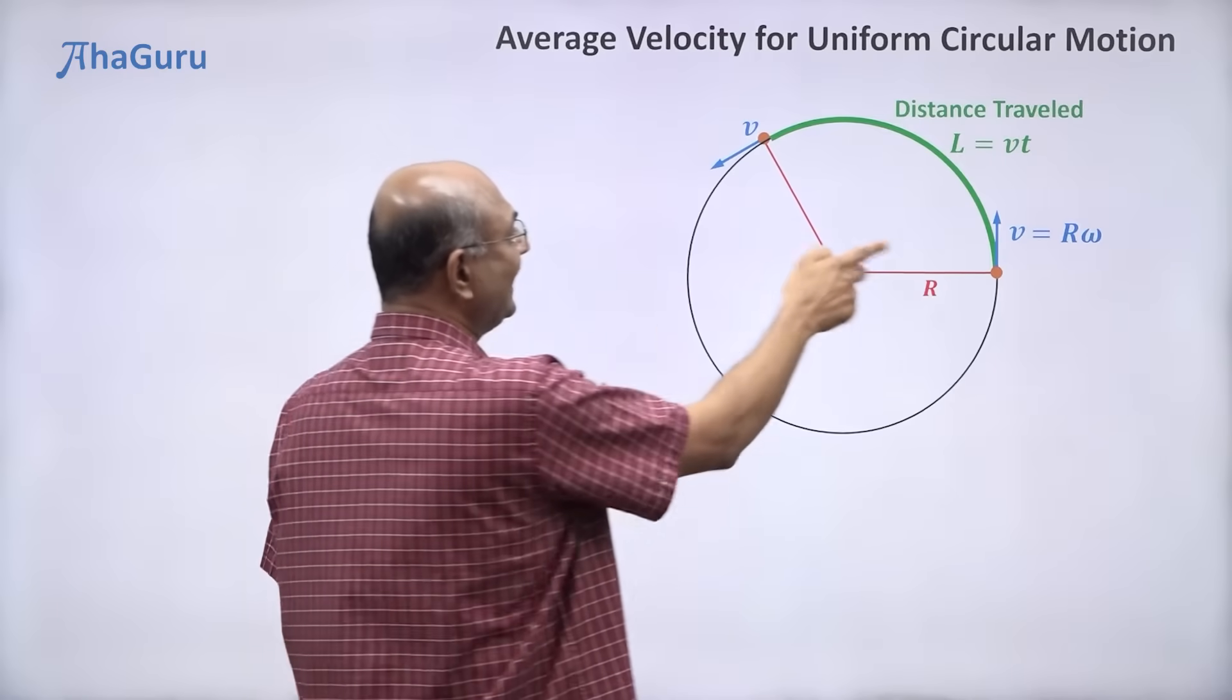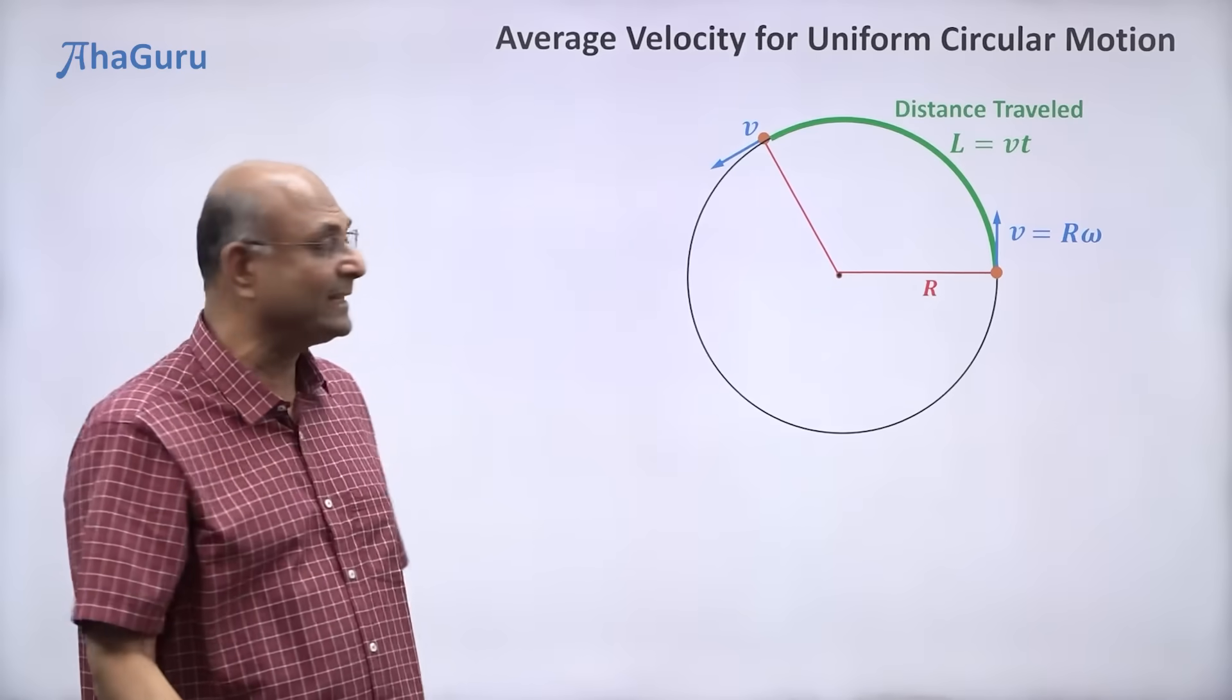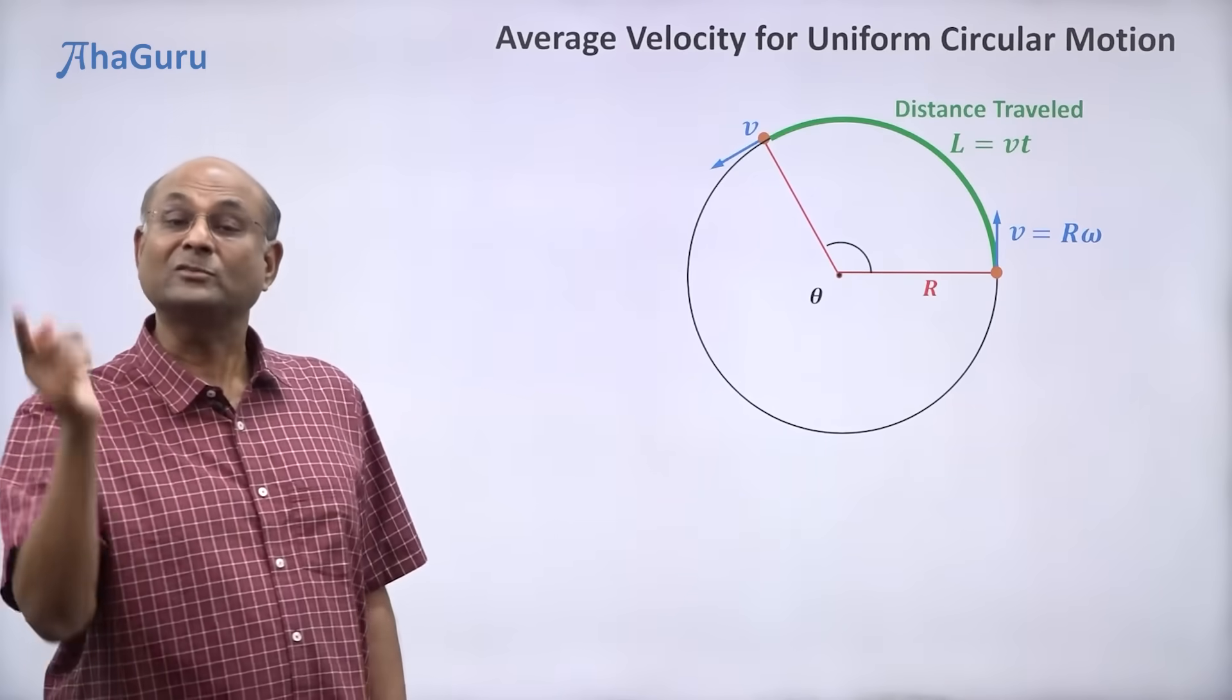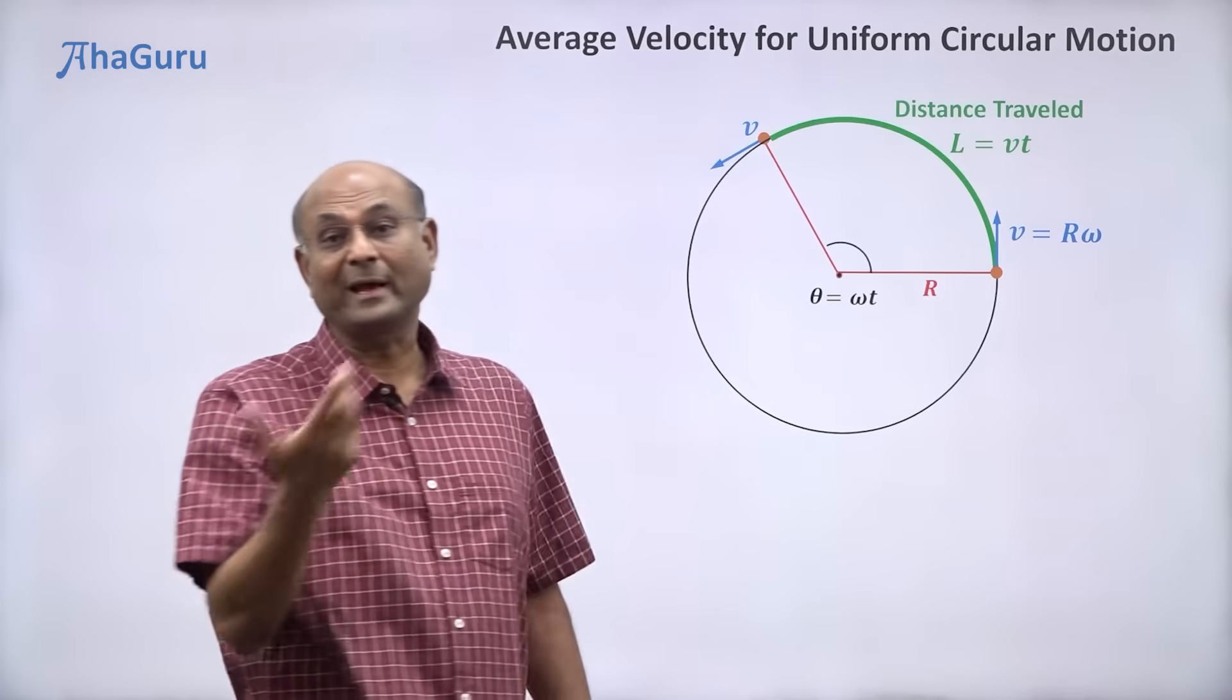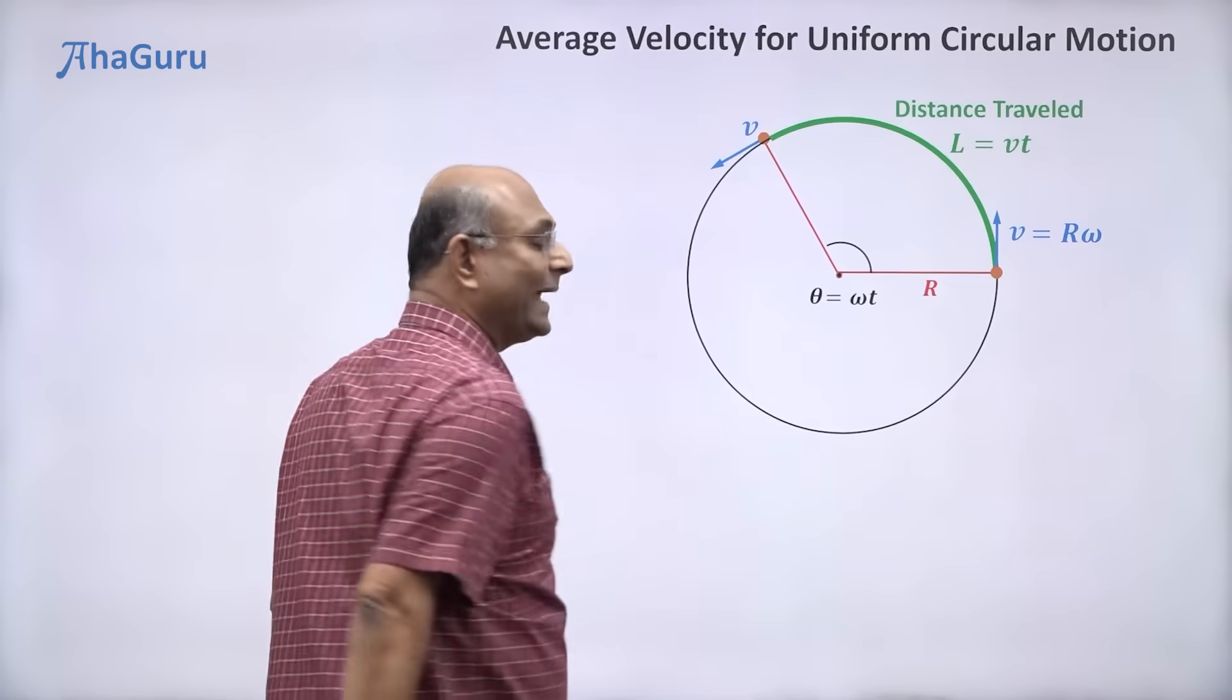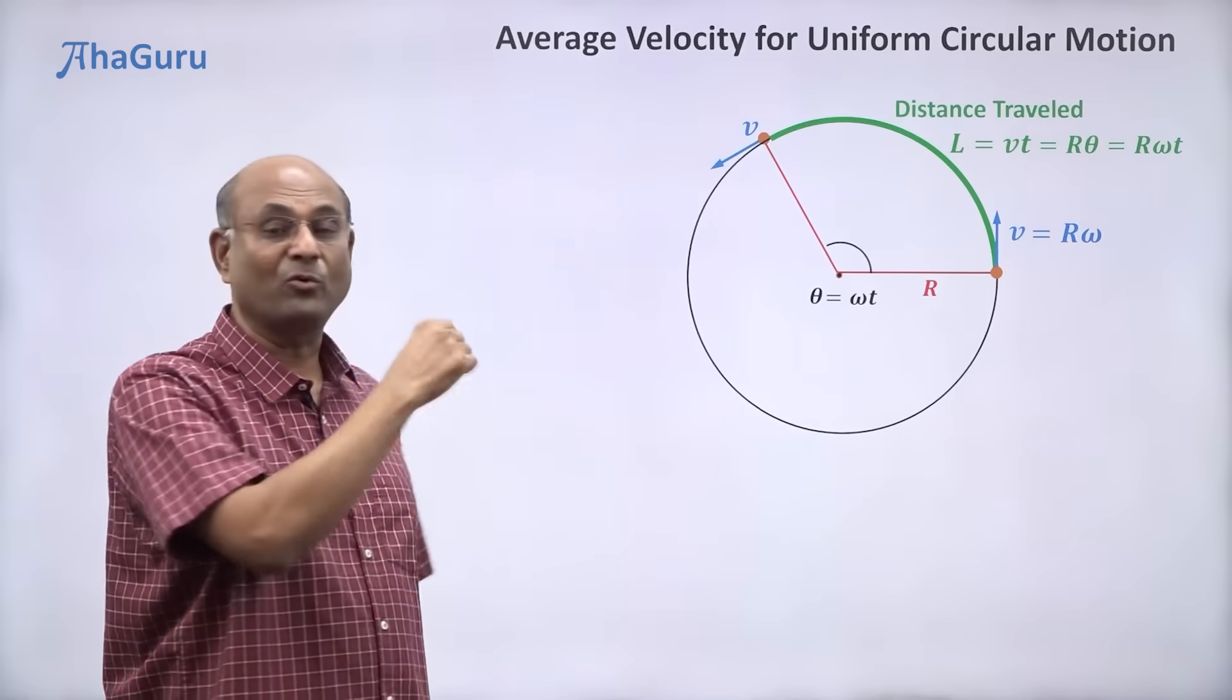Of course, you can also write that this arc length, which is the distance travelled, is r theta. If I knew theta, what is theta? Theta is omega into t because omega is constant. So theta is omega into t. So I can write l as r theta, which is r omega t.